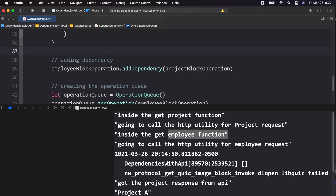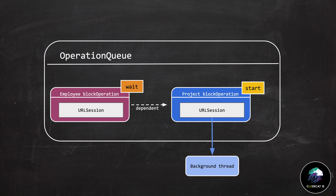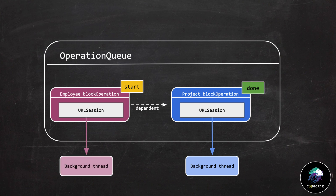Let's talk about the reason why this behavior occurs. If we represent this code in a diagram, employee operation is dependent on project, so the project operation kicks off first and the employee operation waits for the project operation to complete. The behavior we see is because of the URL session, because URL session runs on a separate background thread. The URL session makes it seem like the project operation is completed, triggering the employee operation — but in reality, the URL session thread is still waiting for a response from the server.